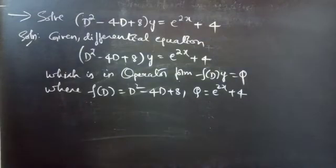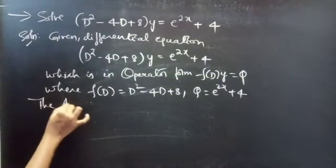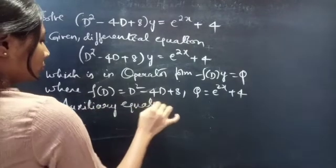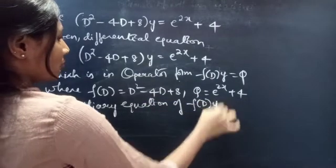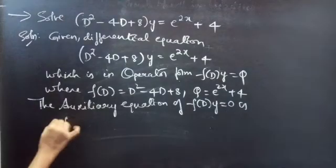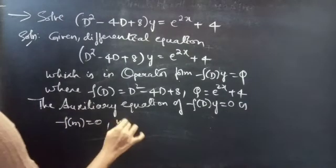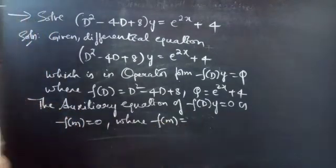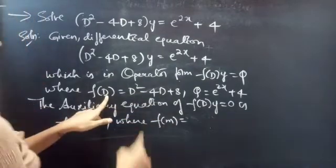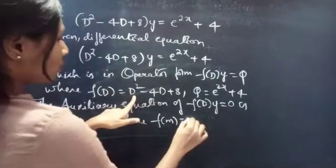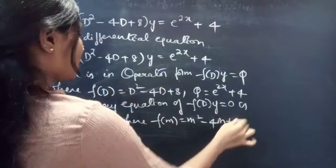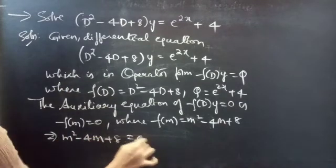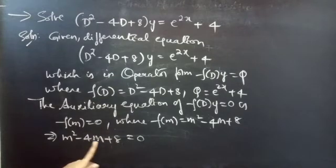Let's find the complementary function using the auxiliary equation. The auxiliary equation of f(D)·y = 0 is f(m) = 0. Here f(D) = D² - 4D + 8, so by replacing the differential operator D with m, we get f(m) = m² - 4m + 8. Therefore the auxiliary equation becomes m² - 4m + 8 = 0.